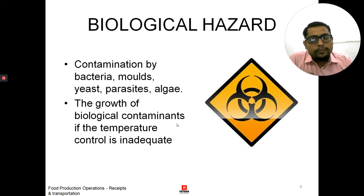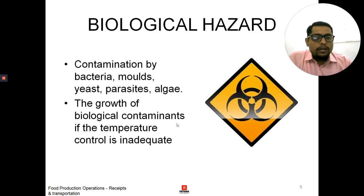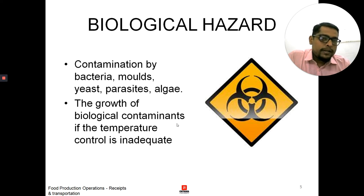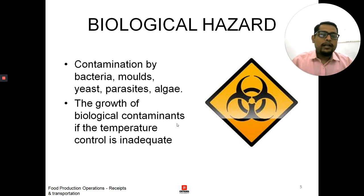Then we have biological hazard. Contamination by bacteria, molds, yeast, parasites, and algae all cause biological hazard. The growth of biological contaminants occurs if temperature control is inadequate. The safe temperature zone where food can be kept is from 1 degree to 4 degrees Celsius. From 5 degrees to 65 degrees is a danger zone, and above 65 degrees is again a safe zone. If food is kept for a long time between 5 to 65 degrees, there could be growth of bacteria and molds, which can cause a biological hazard in food.